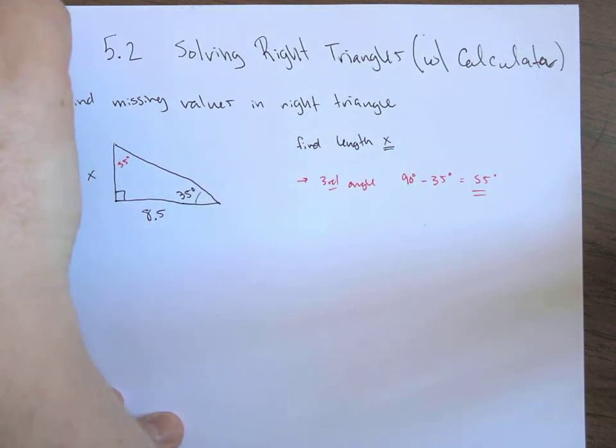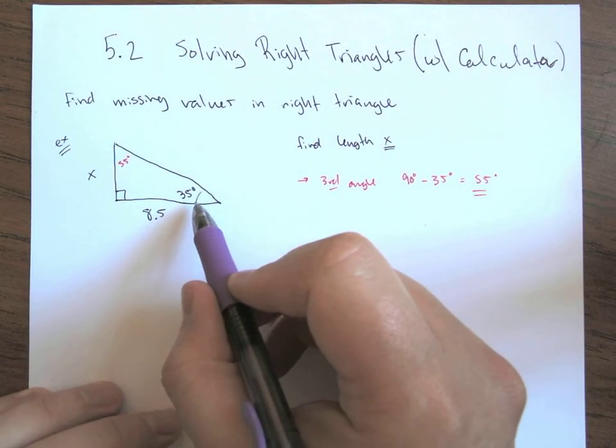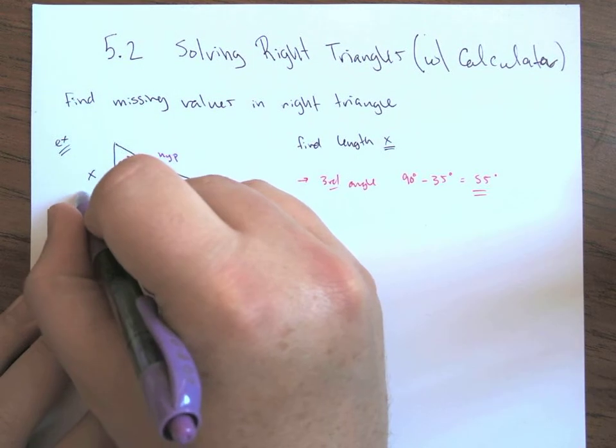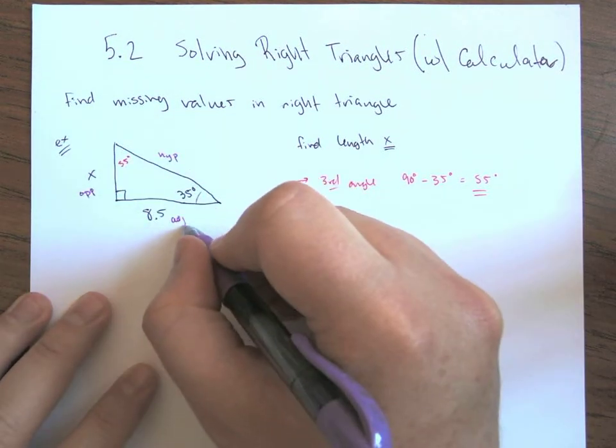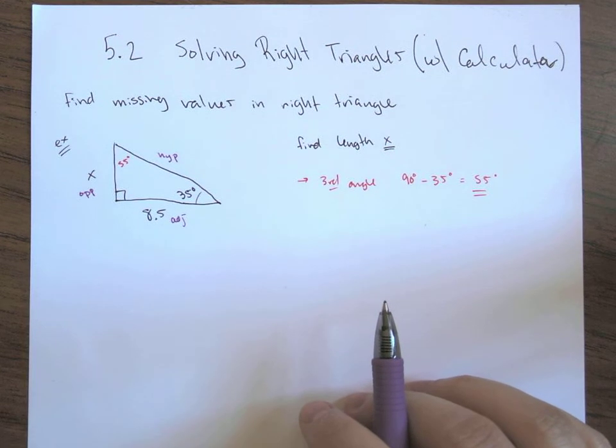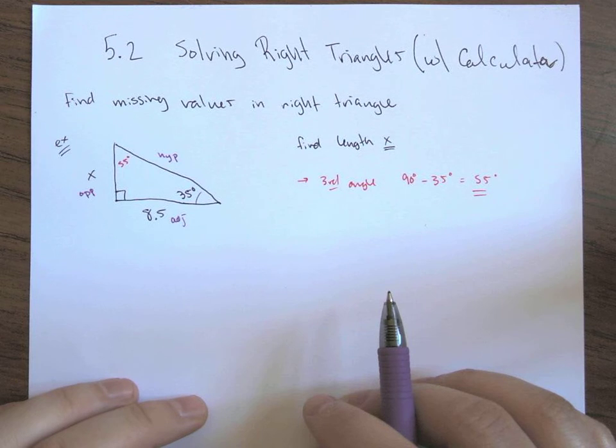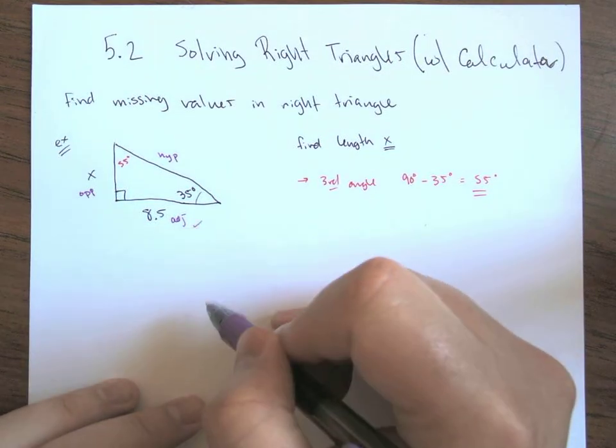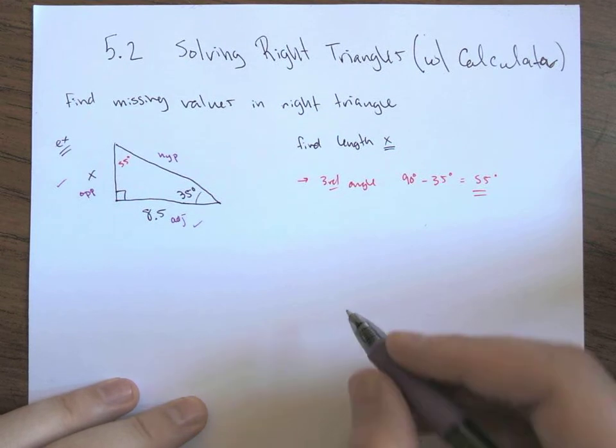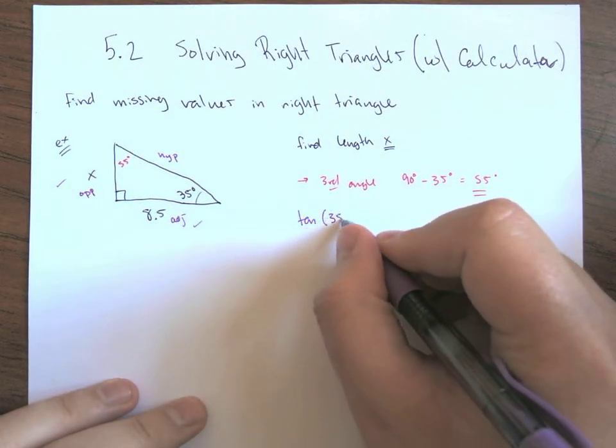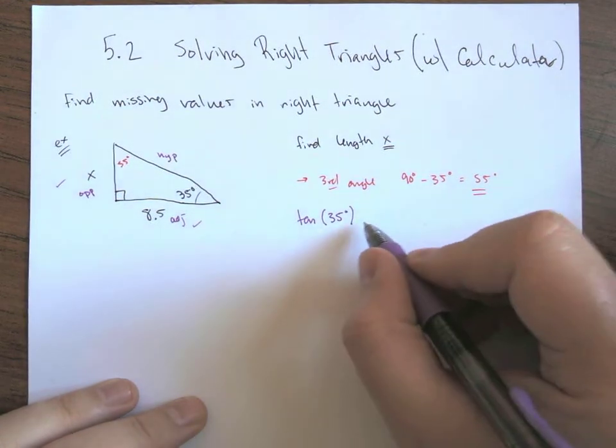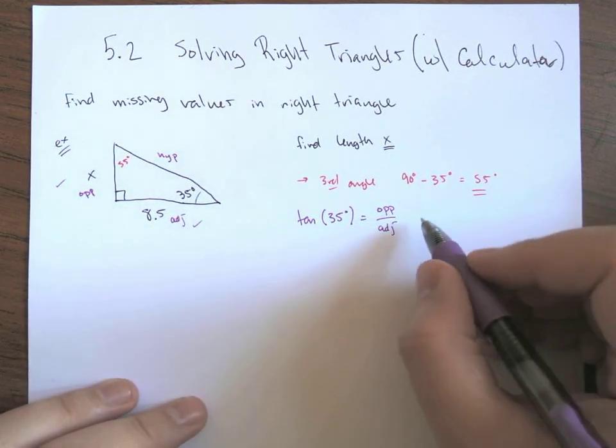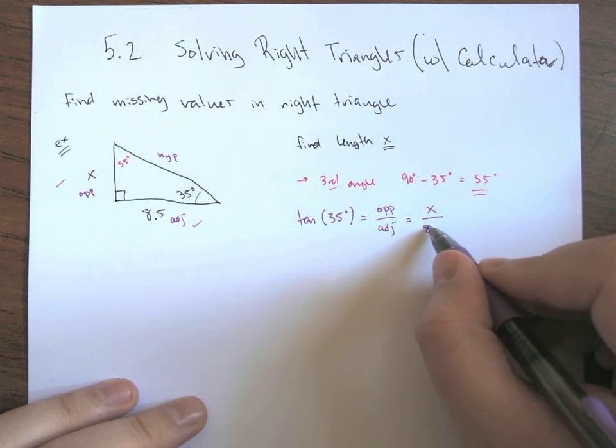But to get this x, we're going to have to do something else. So let's look at this from the perspective of angle 35. Our hypotenuse is up here. The opposite, this side length x, is the opposite side, and then this 8.5 is the adjacent. So if we start to try to do some trigonometry type setups, what we're looking at here is the side we know, which is the adjacent, and then the side we're trying to solve for, which is the x, which is the opposite. So which of our trig functions uses the opposite and the adjacent, and the answer is the tangent function. So tangent of 35 is going to equal this opposite over the adjacent, x over 8.5.